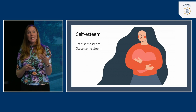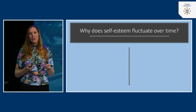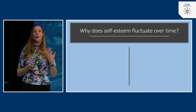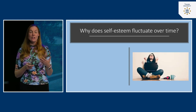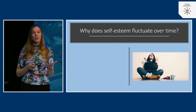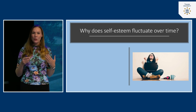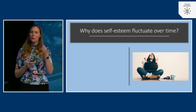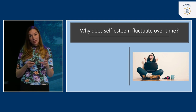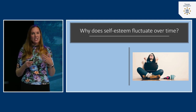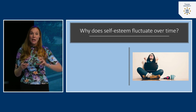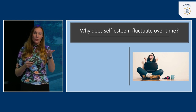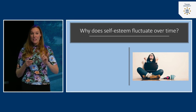So self-esteem is both a trait and a state. One reason it fluctuates is performance in domains you really care about. Imagine you're a motivated student who worked hard, watched all the lectures, took the exam, and aced it. Because excelling in your studies is important to you, you temporarily experience a higher level of self-esteem. Conversely, if you failed the exam, your self-esteem would likely go down.